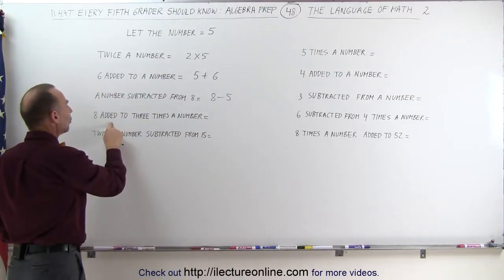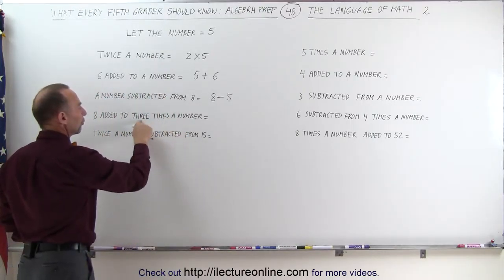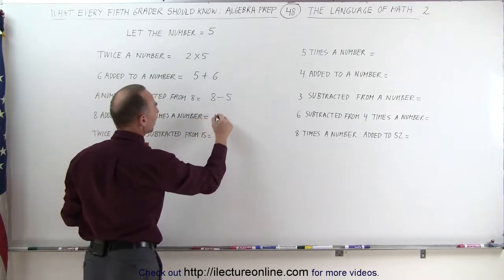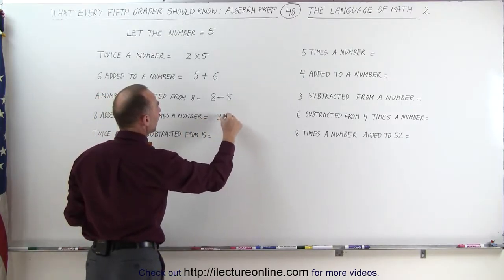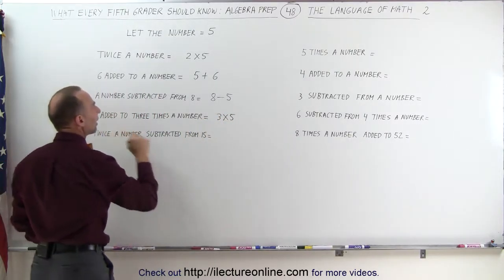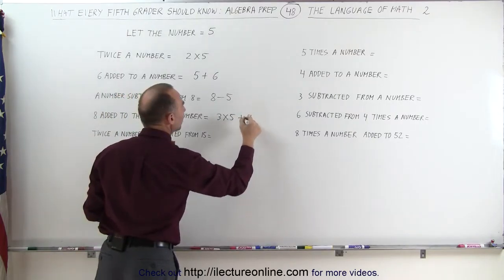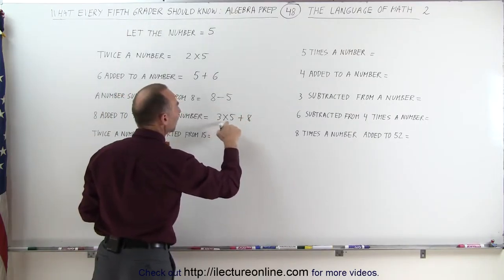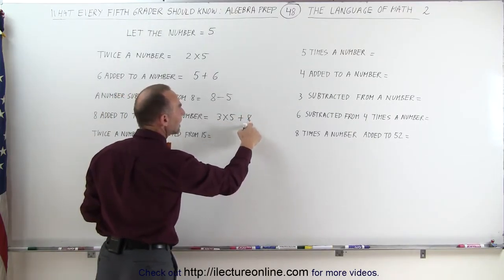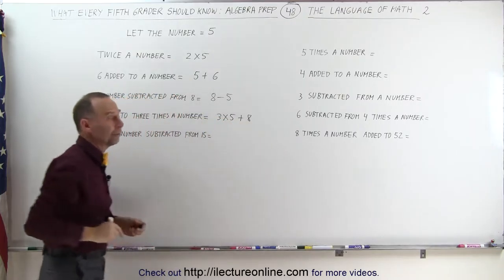8 added to 3 times the number. First we write 3 times the number: 3 times 5. And then it says 8 added to that, so we go plus 8. So 3 times the number plus 8 — that's 8 added to 3 times the number.